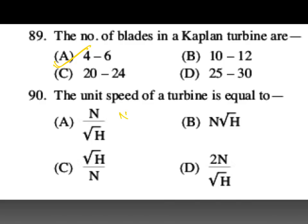Unit speed N_u = N / √H. Unit discharge = Q / √H. Unit power = P / H^(3/2). All are important formulas. In this question, unit speed of turbine equals N divided by root H.